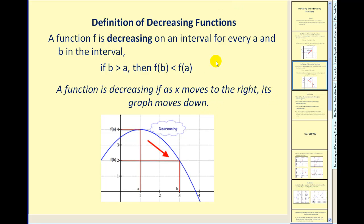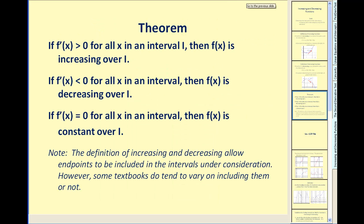There's a connection between the value of a function's derivative and whether it's increasing or decreasing. If the first derivative is greater than zero for all x in an interval, then f of x is increasing over that interval. If f prime of x is less than zero for all x in an interval, then the function is decreasing. And if the derivative is equal to zero, then the function is constant over the interval.